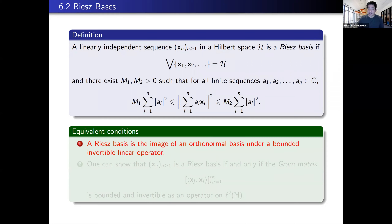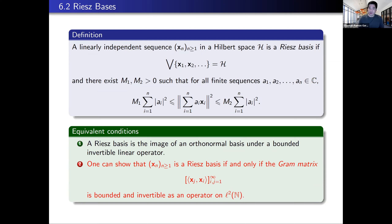There are several equivalent conditions to being a Riesz basis. You could be a Riesz basis because you're the image of an orthonormal basis under a bounded invertible linear operator — the M_1 and M_2 come from the norm of the operator and the norm of its inverse. There are lectures later on interpolation and sampling where you'll hear lots about Riesz spaces. Another equivalent condition is that when you look at the Gram matrix — the infinite matrix of inner products — the result is a bounded and invertible operator on the sequence space l². The Gram matrix criterion is usually the easiest one to apply.